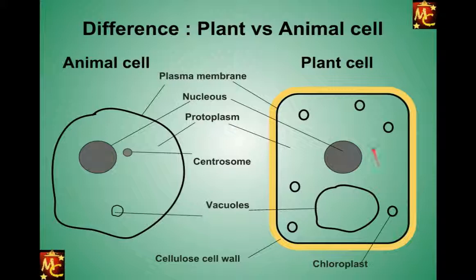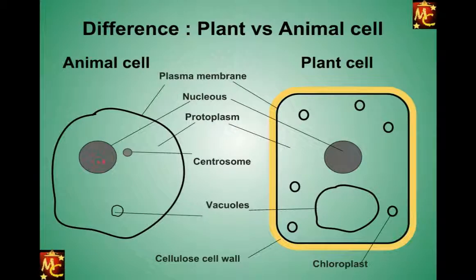To summarize the key points: plant cells have chloroplasts — animal cells do not. Plant cells have vacuoles — animal cells don't, or if they do, they are very small. Plant cells have a cell wall — animal cells do not. The remaining structures are almost similar in both plant and animal cells. One important point to note: plant cells do not have a centrosome.